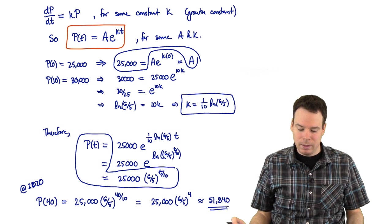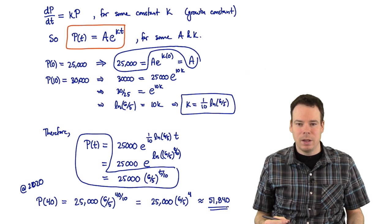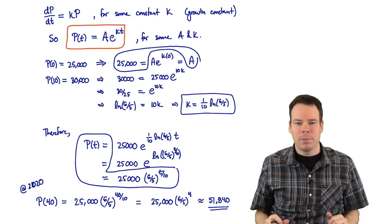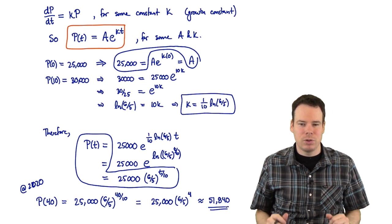So our population in 2020 of Calculopolis is approximately 51 or almost 52,000. And we got that by knowing the initial populations at a couple of different times and the form we suspect the population function must satisfy. The growth rate should be proportional to the amount you have present.